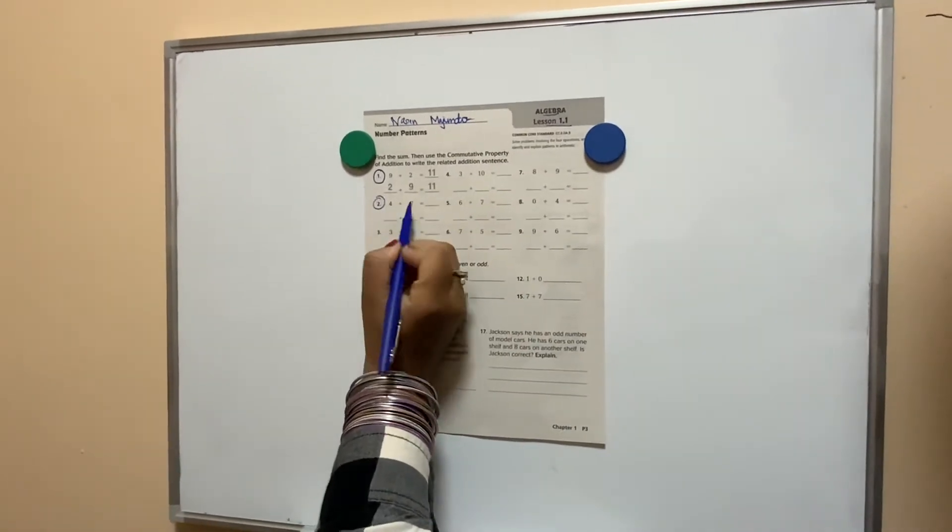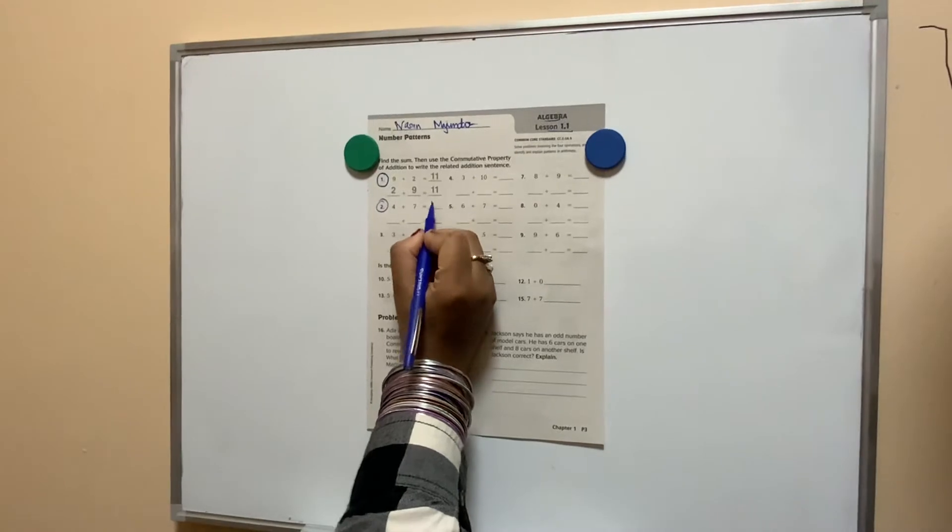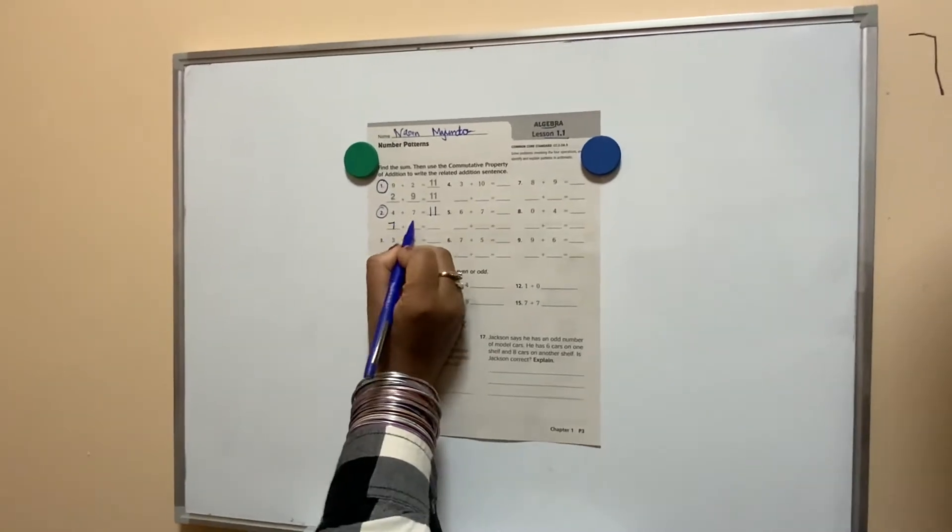The second one. 4 plus 7 is? 4 plus 7 is 11. So, 7 plus 4 is? 11.